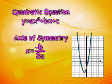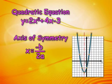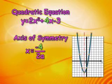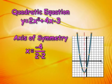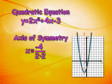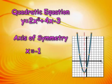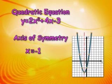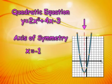So, in our original example, y equals 2x squared plus 4x minus 3, b is 4 and a is 2. When those values are substituted into the equation and simplified, the axis of symmetry is x equals negative 1. On a graph, that's the vertical line passing through negative 1 on the x-axis.